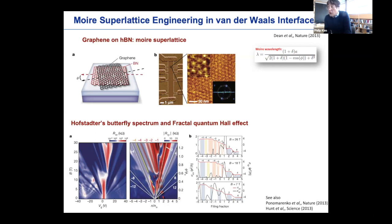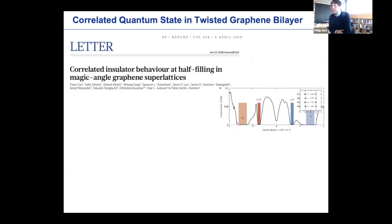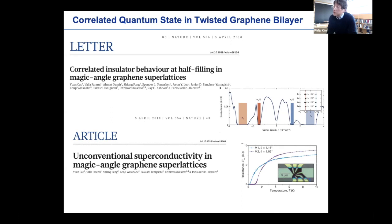The field really got excited two years ago when Pablo's group at MIT showed that at the right magic angle — what Allan predicted eight years ago — there is indeed correlated insulating behavior stemming from very flat band formations, exactly what theory precisely expected. Even more so, quite unexpectedly, when you dope this flat band system and move away slightly from the correlated insulating region, the sample becomes superconducting. That's quite unexpected, and therefore very exciting new efforts started.